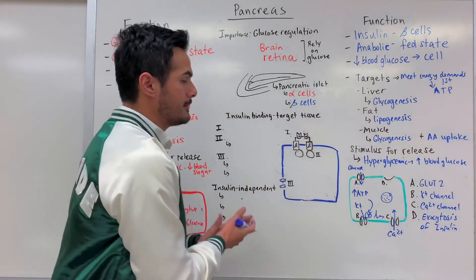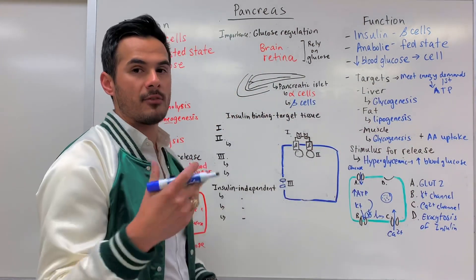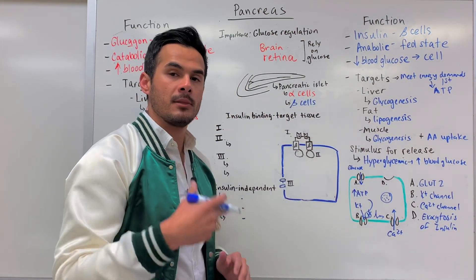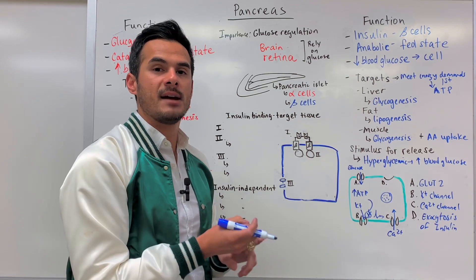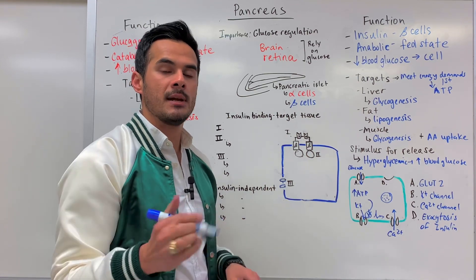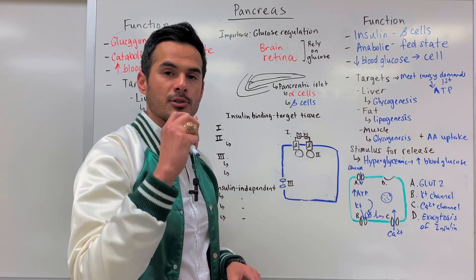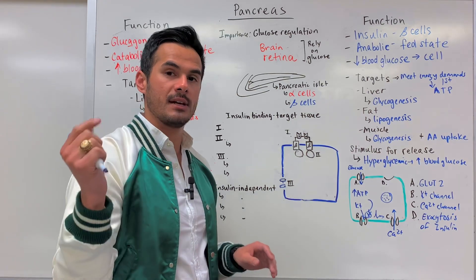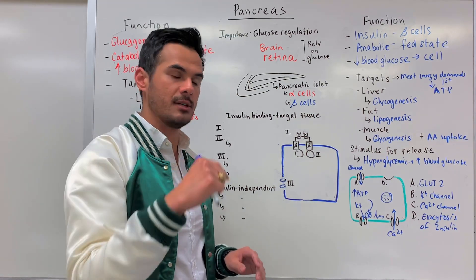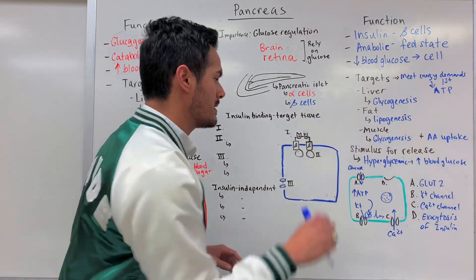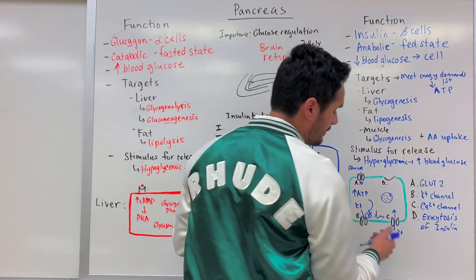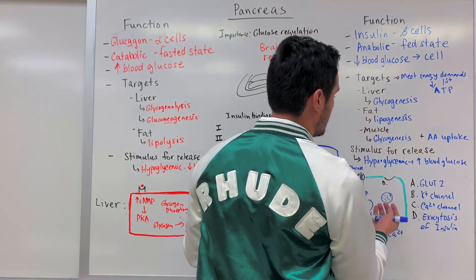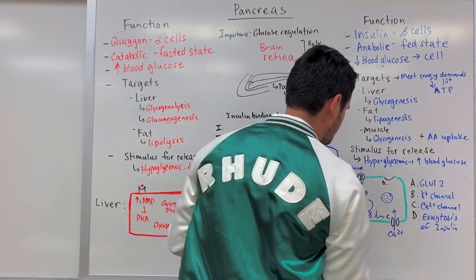This should be familiar — similar to what we learned about neurons last semester. In order for the presynaptic neuron to release neurotransmitter into the synaptic cleft, you have to have the influx of calcium. This is a similar situation in order for us to release insulin and get it into the blood.